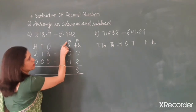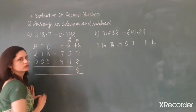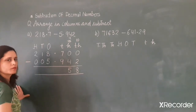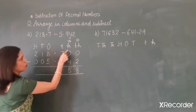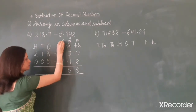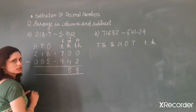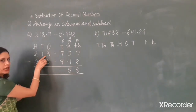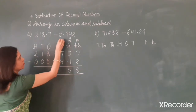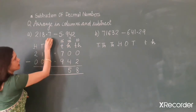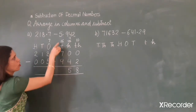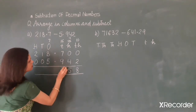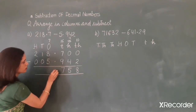Since 10 gave 1 borrow, 9 is left. So now subtract 4 from 9: 9 minus 4 is 5. Here, 7 gave 1 borrow, so 6 is left. Now subtract 9 from 6, but 6 is smaller than 9, so 6 takes borrow from 8. When 8 gives borrow it becomes 16, and 7 is left. Now 16 minus 9 is 7. Put the decimal point here.